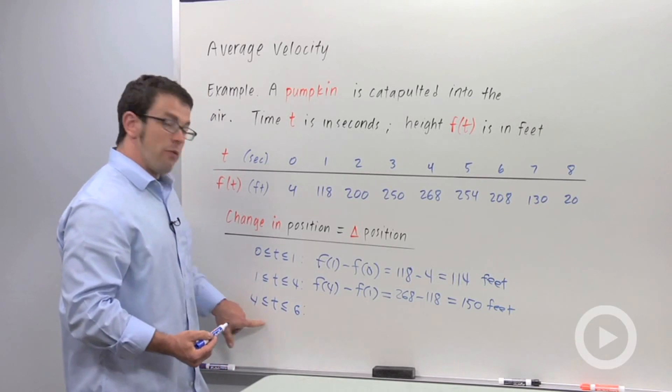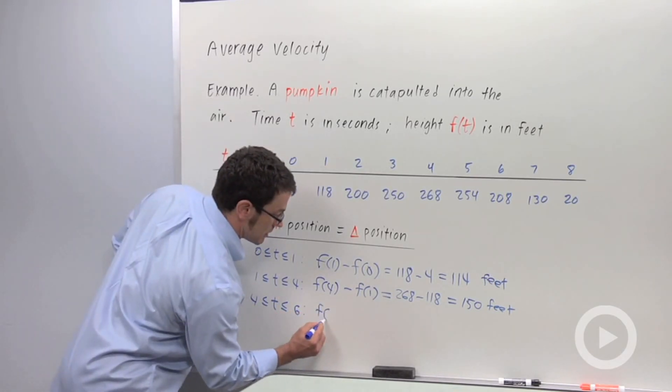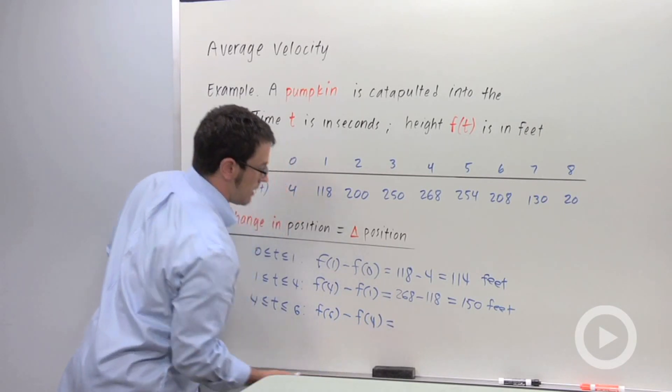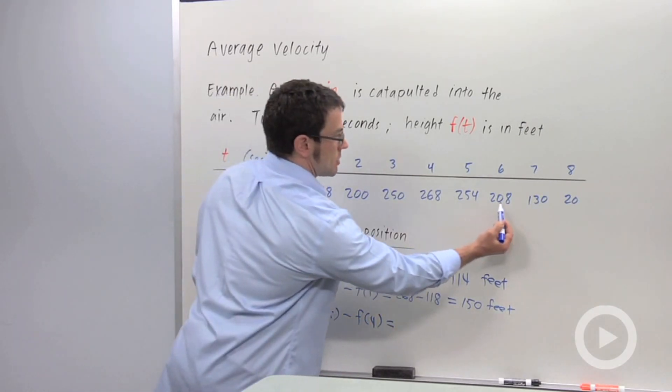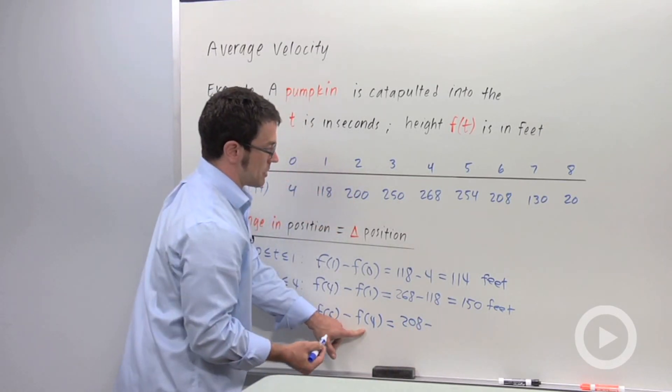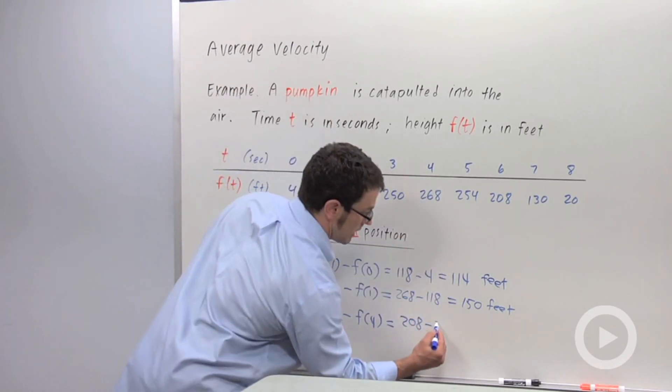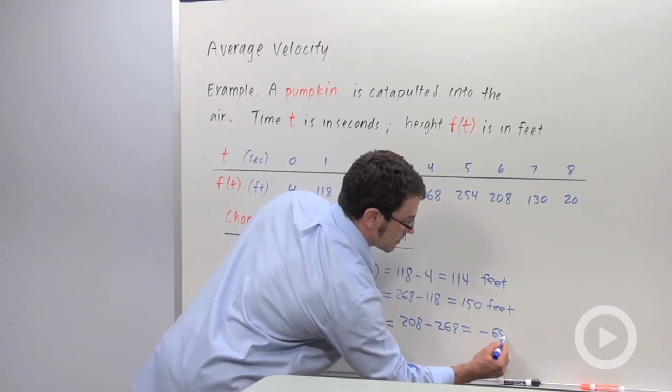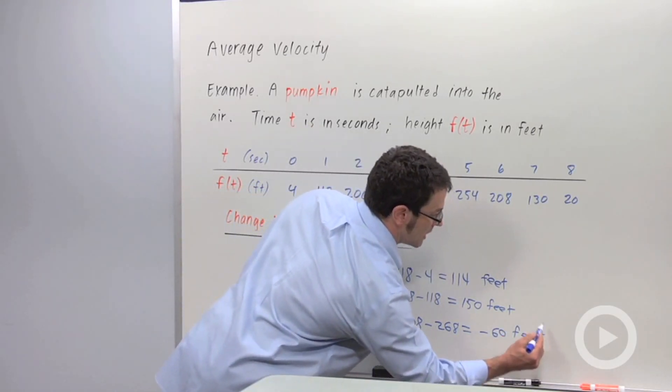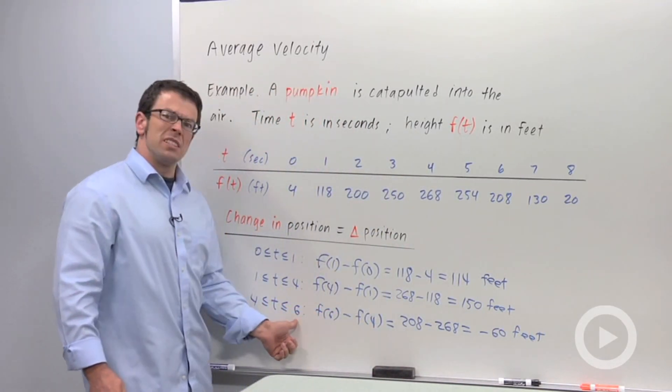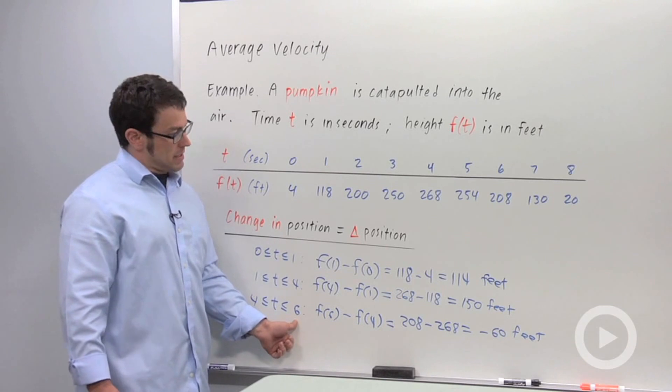And finally, from 4 to 6, you get f of 6 minus f of 4. f of 6, 208. That's the final position minus the initial position, f of 4, 268. And you get negative 60. Now what does that mean? That means that over this interval from t equals 4 to t equals 6, the pumpkin has dropped 60 feet.